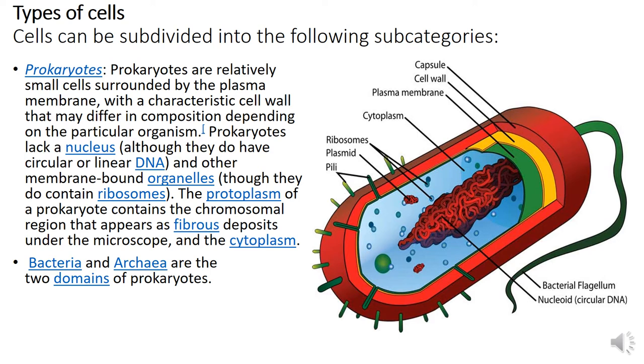Types of cells: cells can be subdivided into the following subcategories — prokaryotic cells or eukaryotic cells.